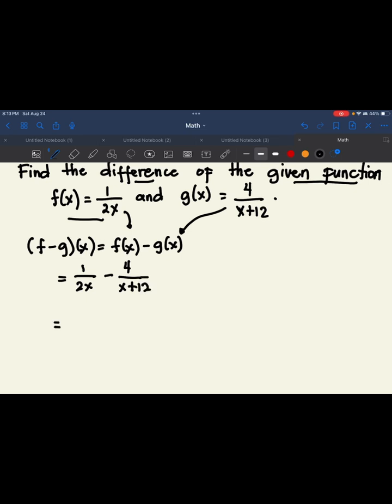we need to find the LCD. So to find the LCD, if you don't know, all of the denominators, that is your LCD. So our denominator is 2x times x plus 12.